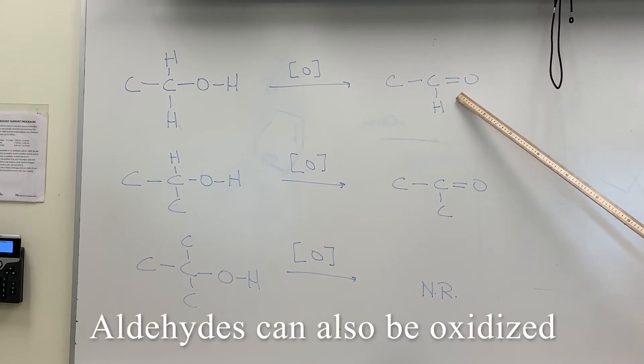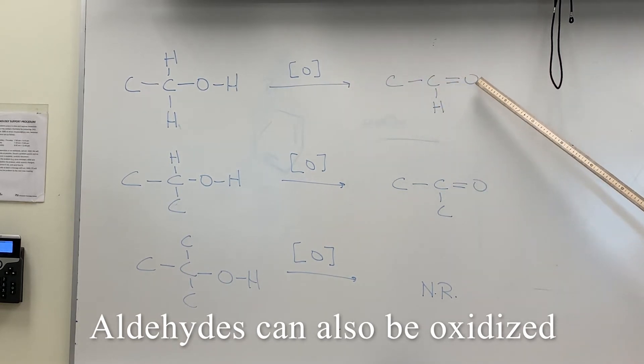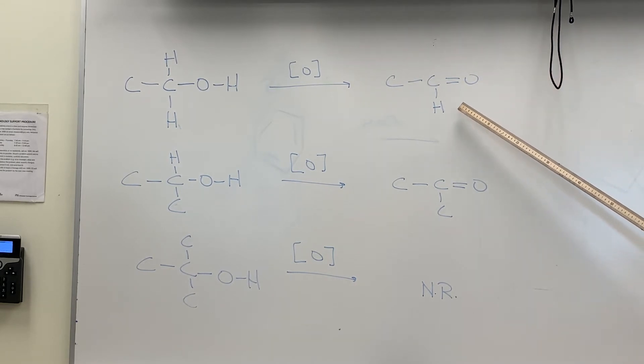The problem with aldehydes, however, is that they are also easily oxidized. So if you have a fairly strong oxidizing agent, this will form first but then will go further and form a carboxylic acid. The only difference between the carboxylic acid and aldehyde is we have an oxygen substituted in between the carbon and this hydrogen.